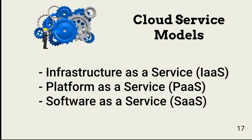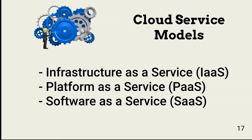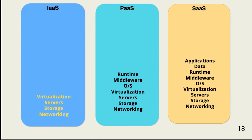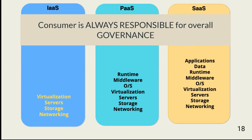CSP cloud deployment agreements with consumers determine the services provided. These services generally fall into one of three cloud service models: IaaS, PaaS, and SaaS. The technology included in each model, and who is responsible for security across each, depends on the CSP's offerings and what the consumer can negotiate into the service agreement. In general, the consumer is responsible for the security associated with the technology not supplied by the CSP. The consumer can never relinquish its responsibility for overall governance of all data collected, stored, and processed in the cloud.